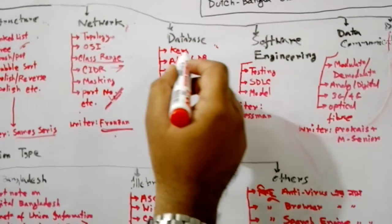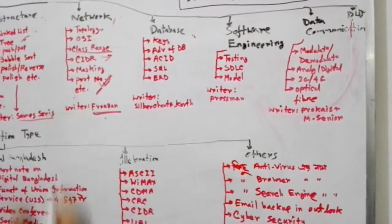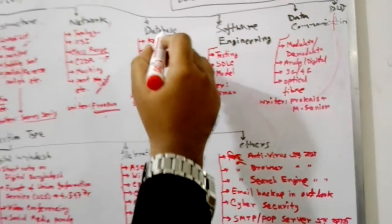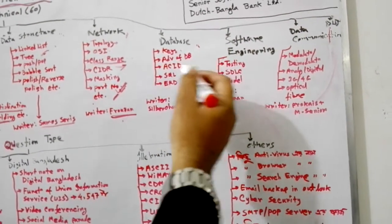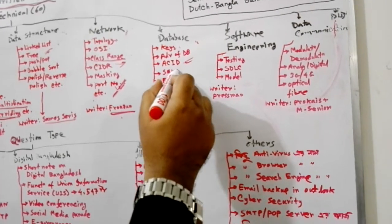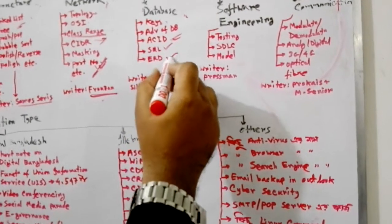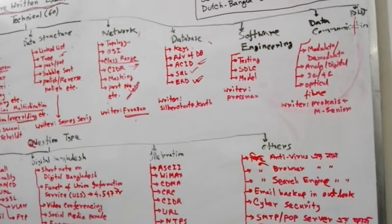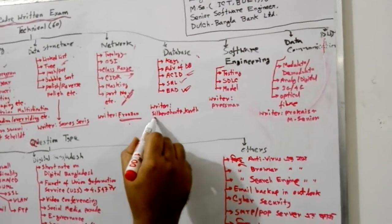Database mainly covers keys: primary key, candidate key. The advantages of databases include ACID properties tasks. You should be able to read SQL and understand ER diagrams. Database is mainly covered through silver search references.